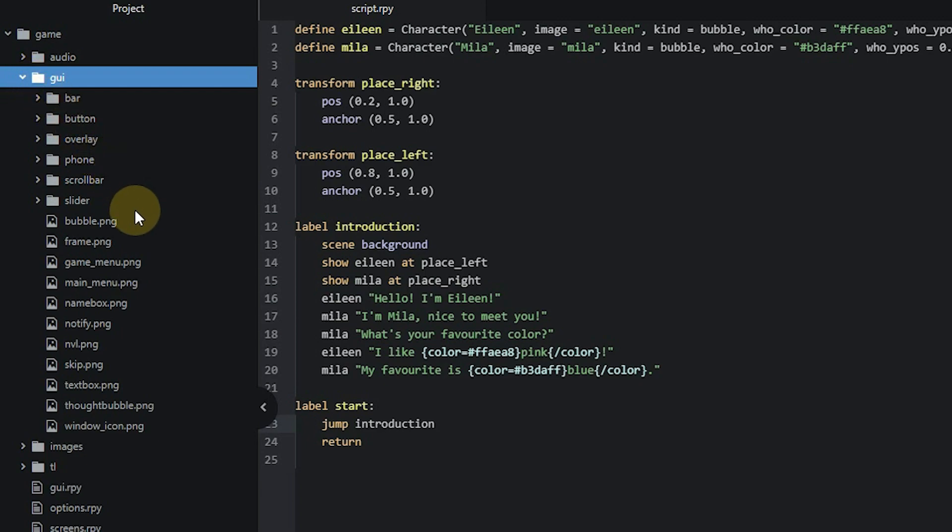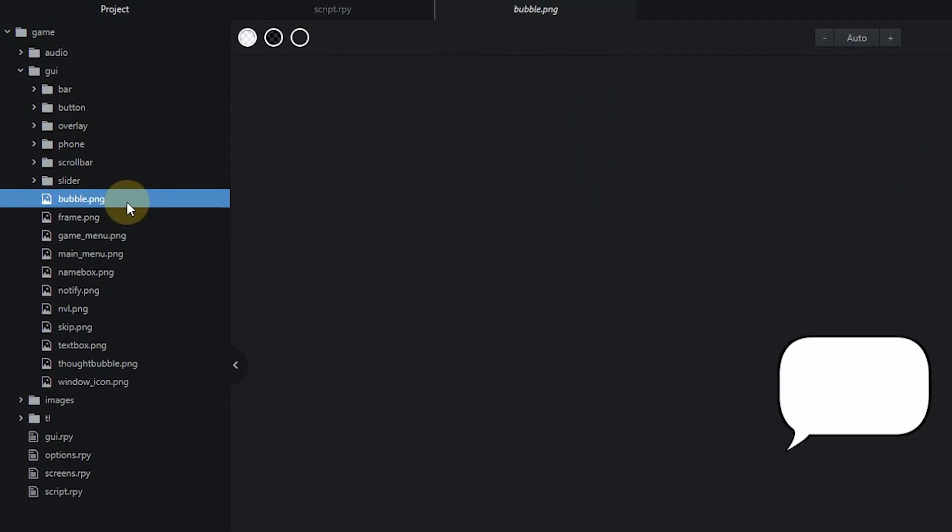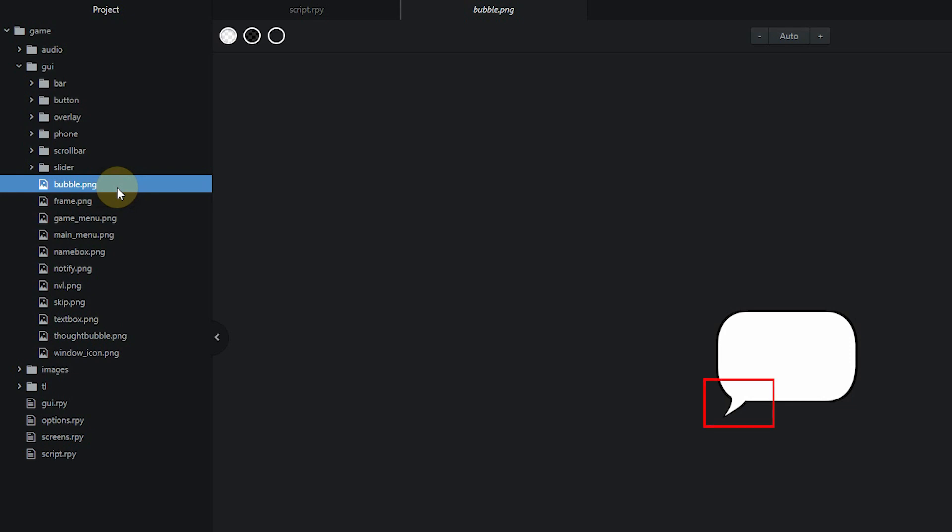To change the images used for bubbles, you can like normal swap them for your own in the GUI folder. The default bubble with the tail in Ren'Py has its tail in the bottom left corner, so when you make your own version, it's good if you keep it the same, so the orientation is correct when you're using the bubble editor.